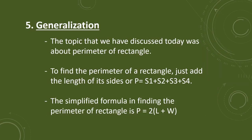For the generalization, the topic we discussed today was about perimeter of rectangle. To find the perimeter of a rectangle, just add the length of its sides: P equals S1 plus S2 plus S3 plus S4. The simplified formula in finding the perimeter of rectangle is P equals 2 times L plus W.